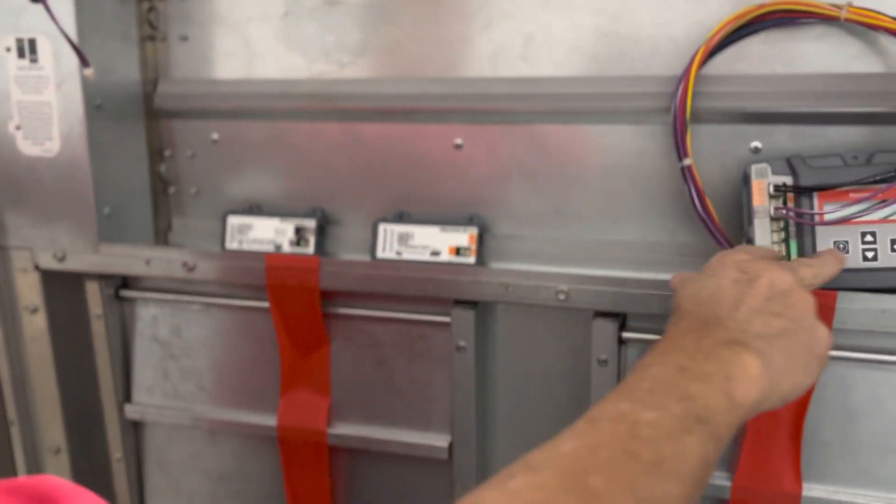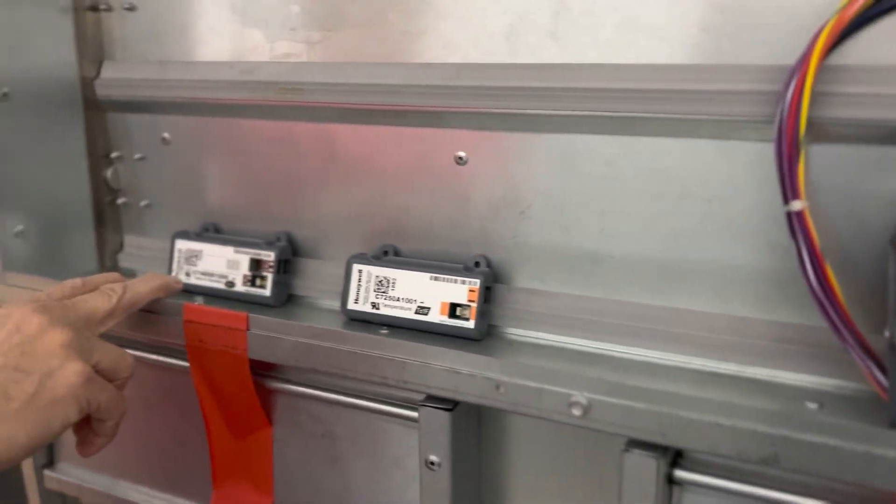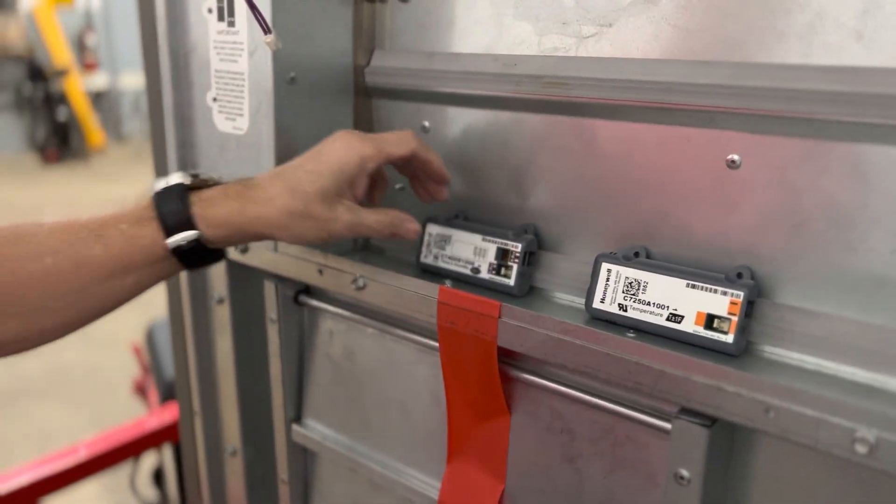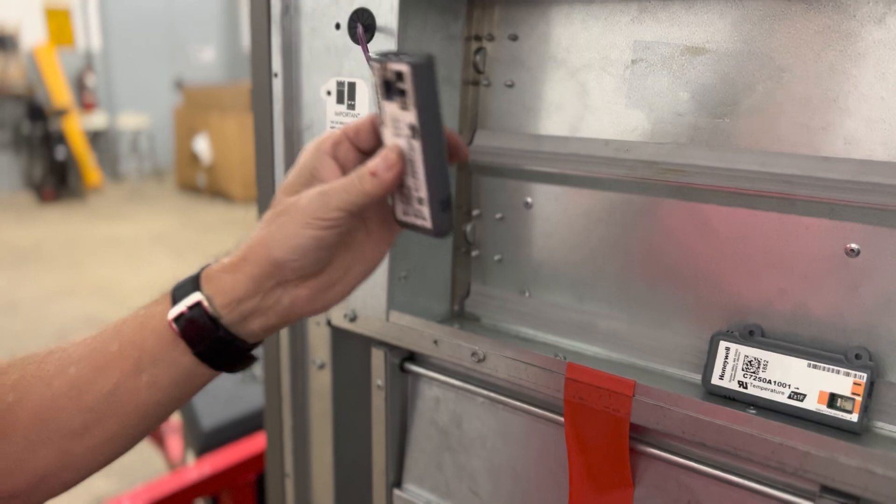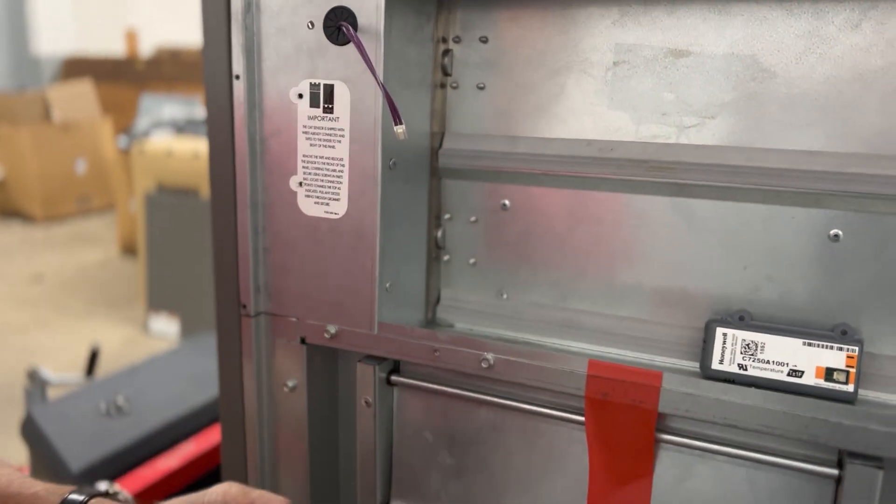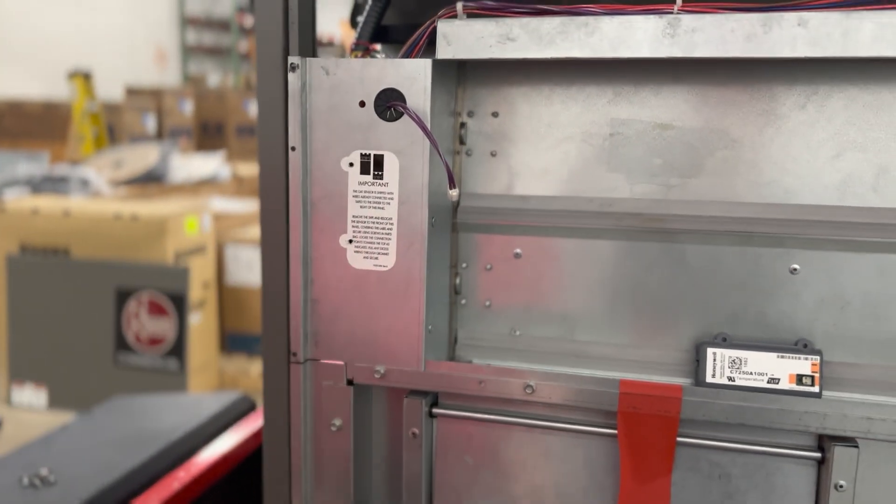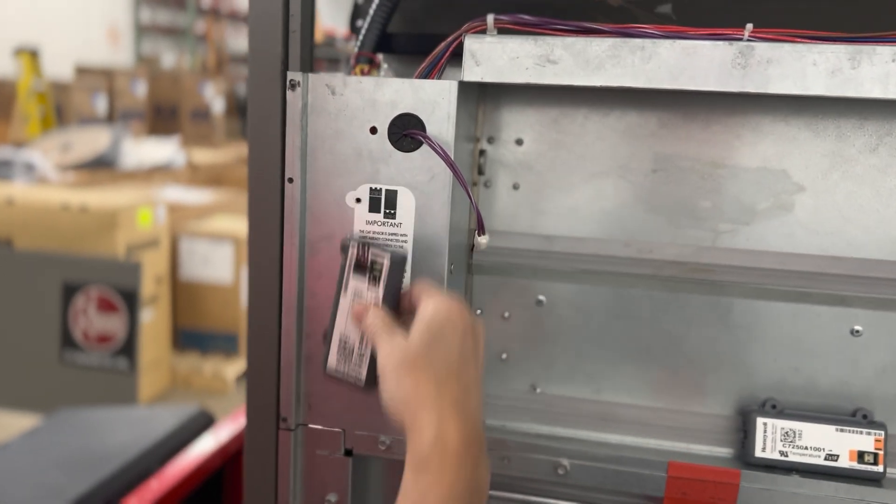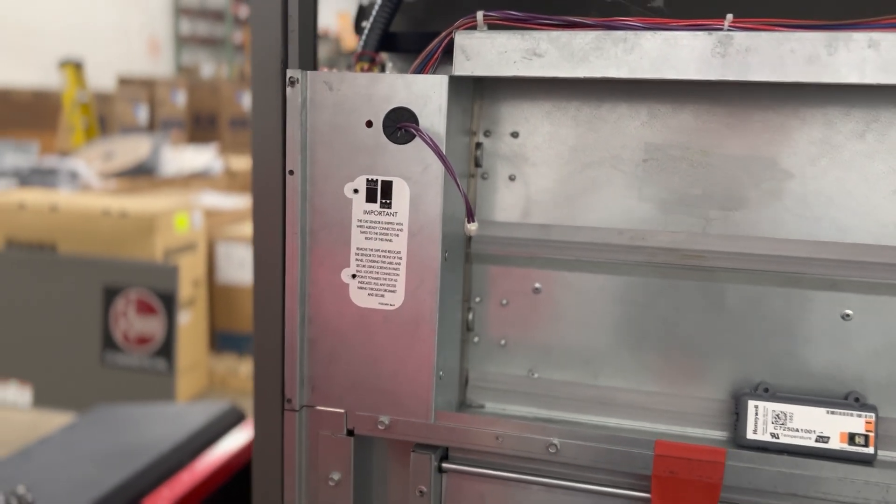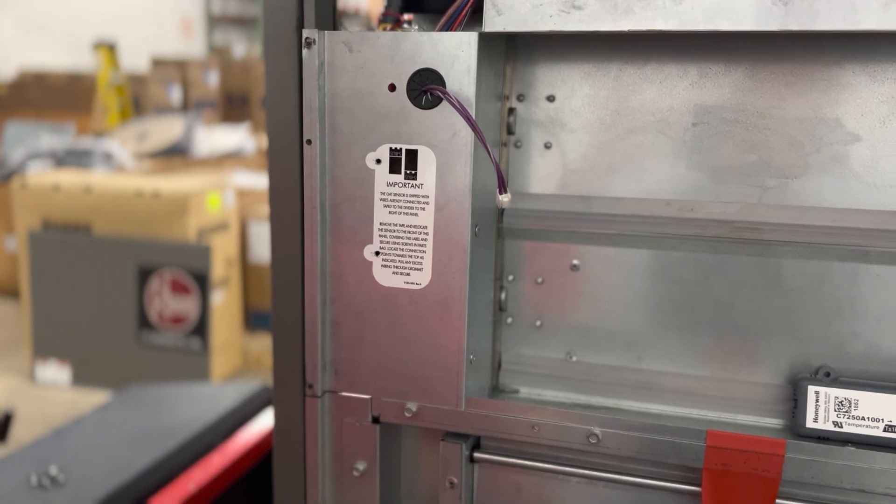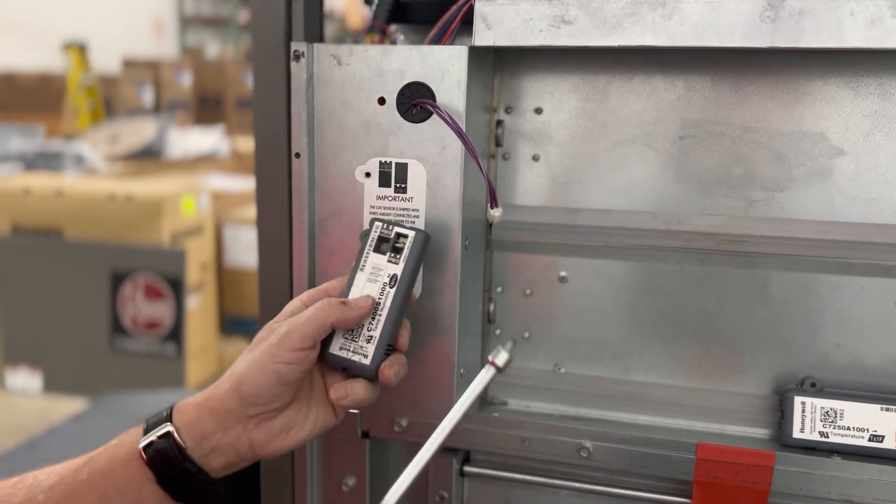Along the top of my damper, I have the three main controls for the economizer. The first one we're going to look at is the enthalpy control. This is the outdoor humidity and air temperature sensor. As you can see, there is a decal right here that this lines up with. What we're going to do is we're going to screw the enthalpy sensor right here.